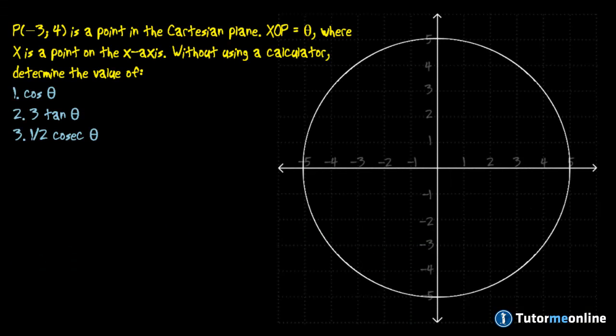Let's have a look at a sample question when defining ratios in the Cartesian plane. The question states that the point P at the xy coordinates minus 3 and 4 is a point in the Cartesian plane.